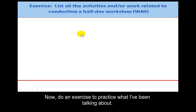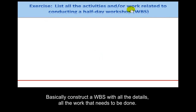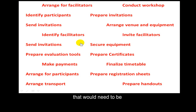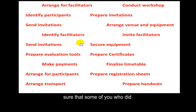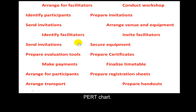Now I'd like you to do an exercise to practice what we've been talking about. List all the activities and work related to conducting a half-day workshop — basically construct a WBS with all the details of the work that needs to be done. On the screen you'll see the results of a brainstorming process: a listing of many of the activities that would need to be done as part of planning and implementing a half-day workshop. There could be many more, but we'll use what's here as the building blocks for the WBS and the PERT chart.